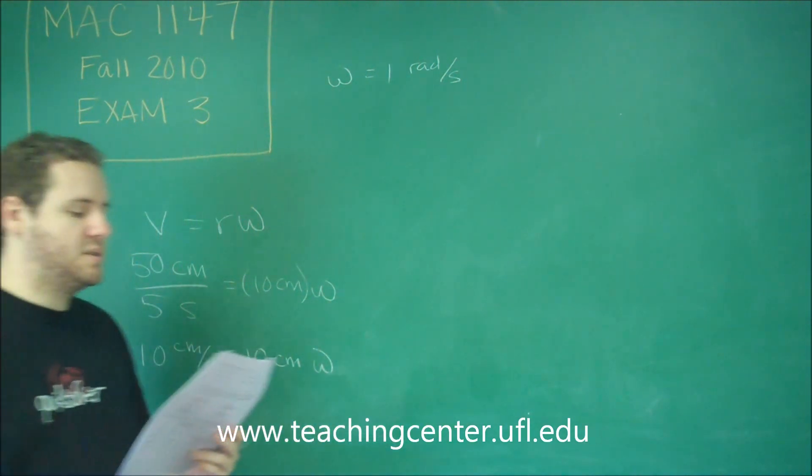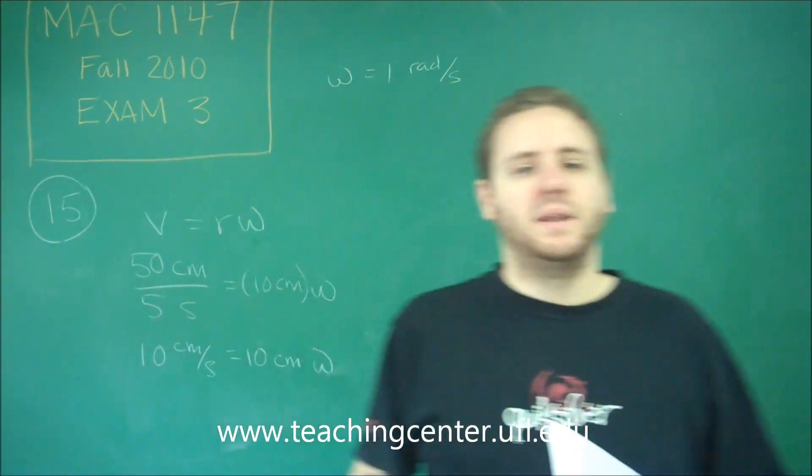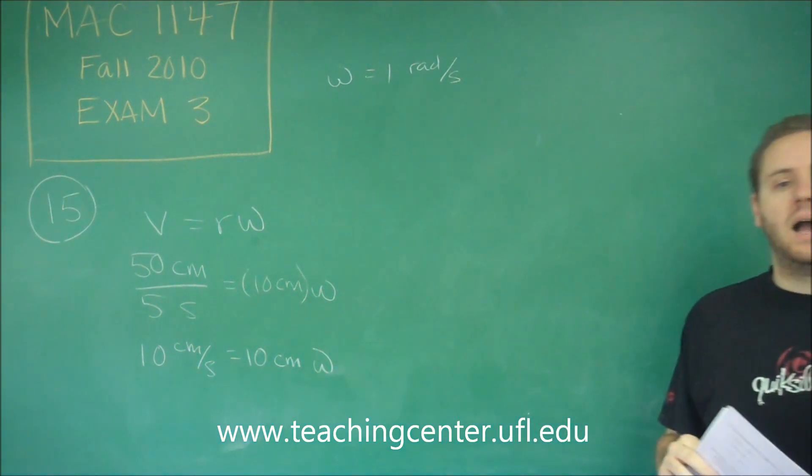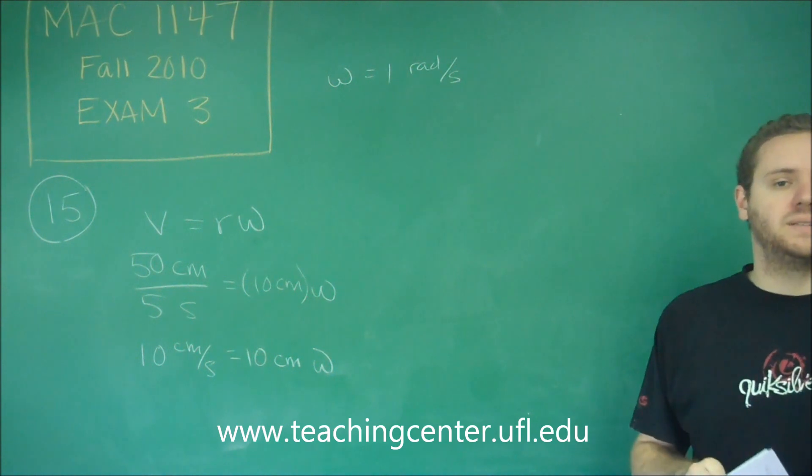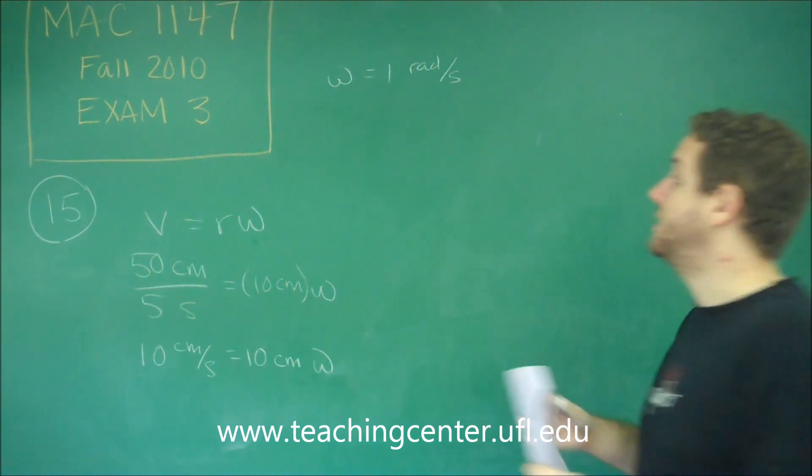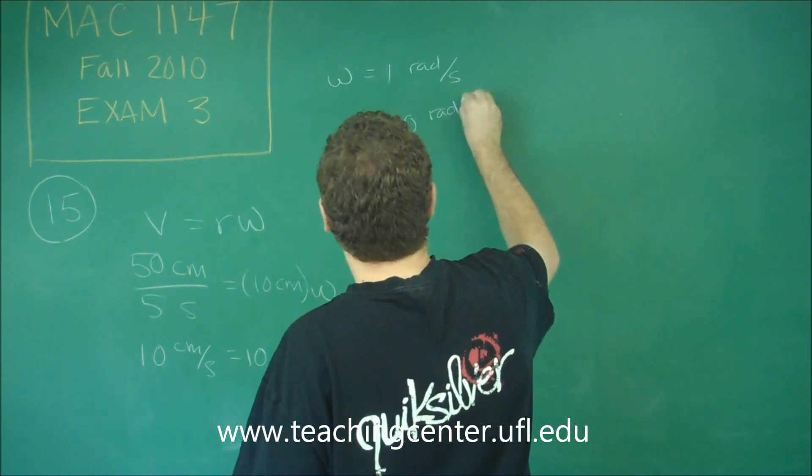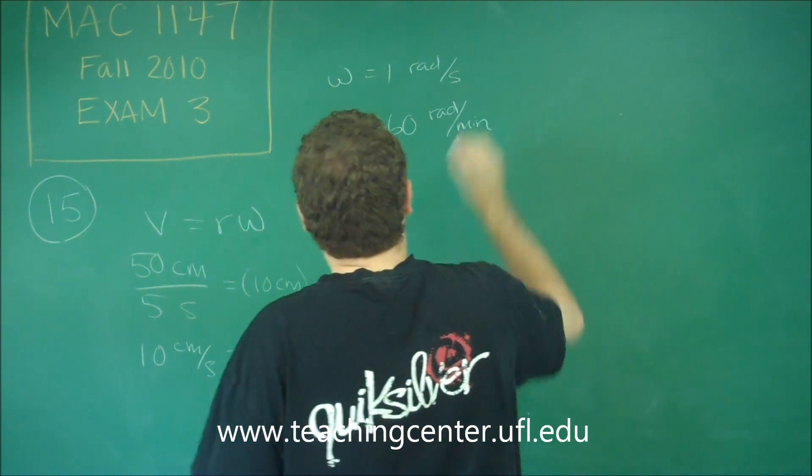If you look at your answer choices though, they're all radians per minute. That's a pretty easy conversion. If you do 1 radian every second, how many do you do in a minute? Well, how many seconds are there in a minute? There's 60.